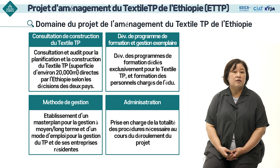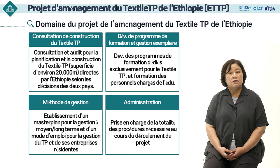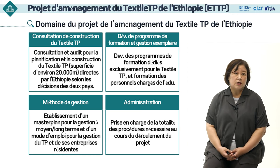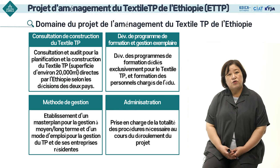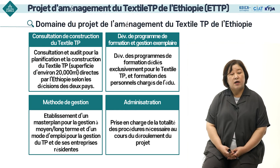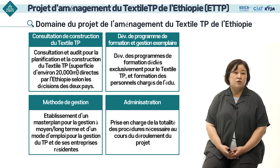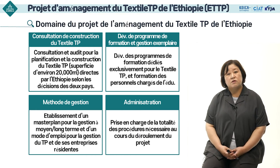Voici l'étendue du projet. À travers ce projet, la première chose que la Corée soutient lors de l'aménagement c'est la consultation pour la construction. Le terrain et le bâtiment sont fournis par la partie éthiopienne, mais concernant l'organisation de l'espace, la conception de base ainsi que la conception détaillée, c'est la partie coréenne qui prend en charge. La partie coréenne a soutenu toutes les conceptions pour l'électricité, la communication et l'espace, et fournit des consultations pratiques pour la construction.